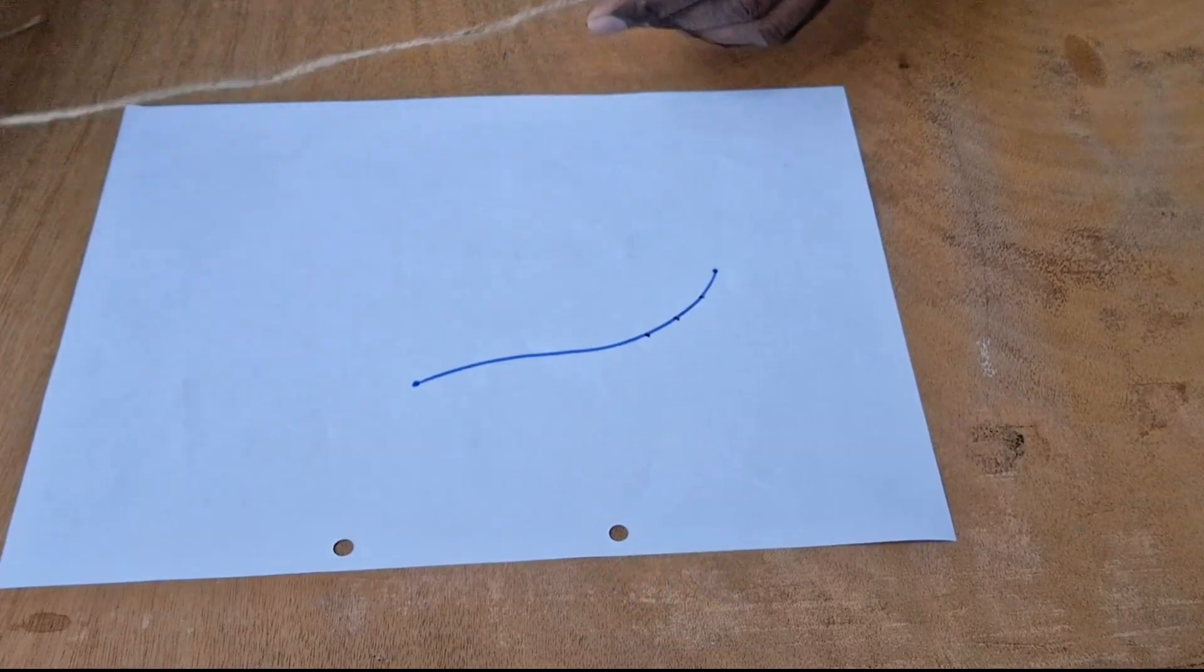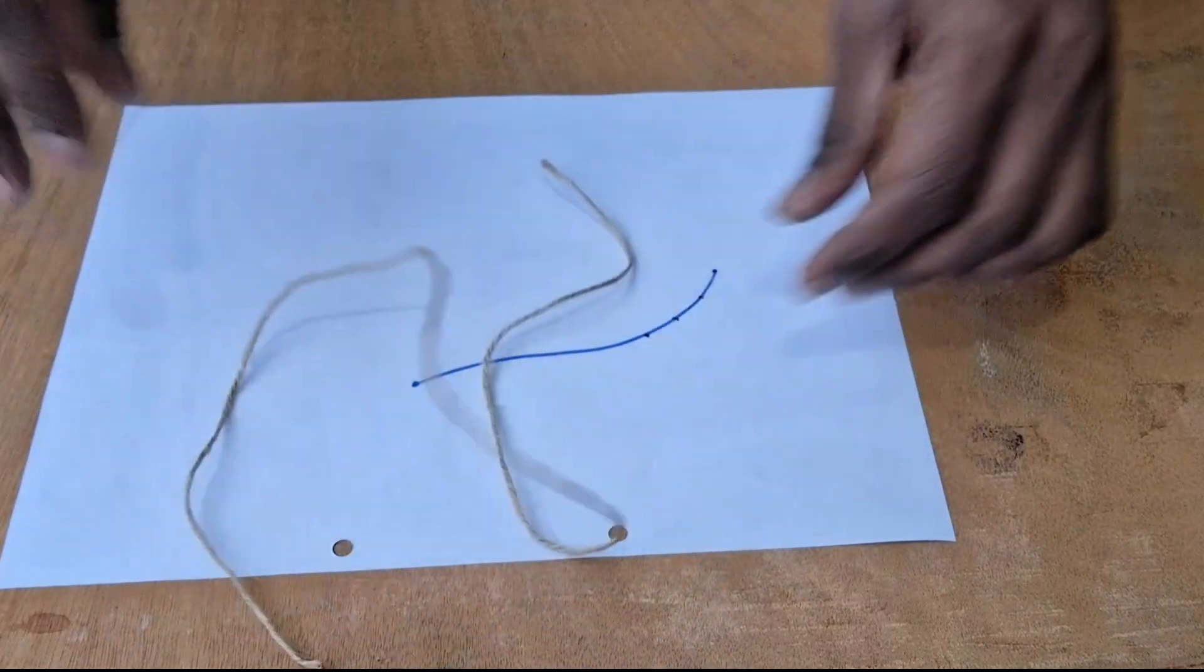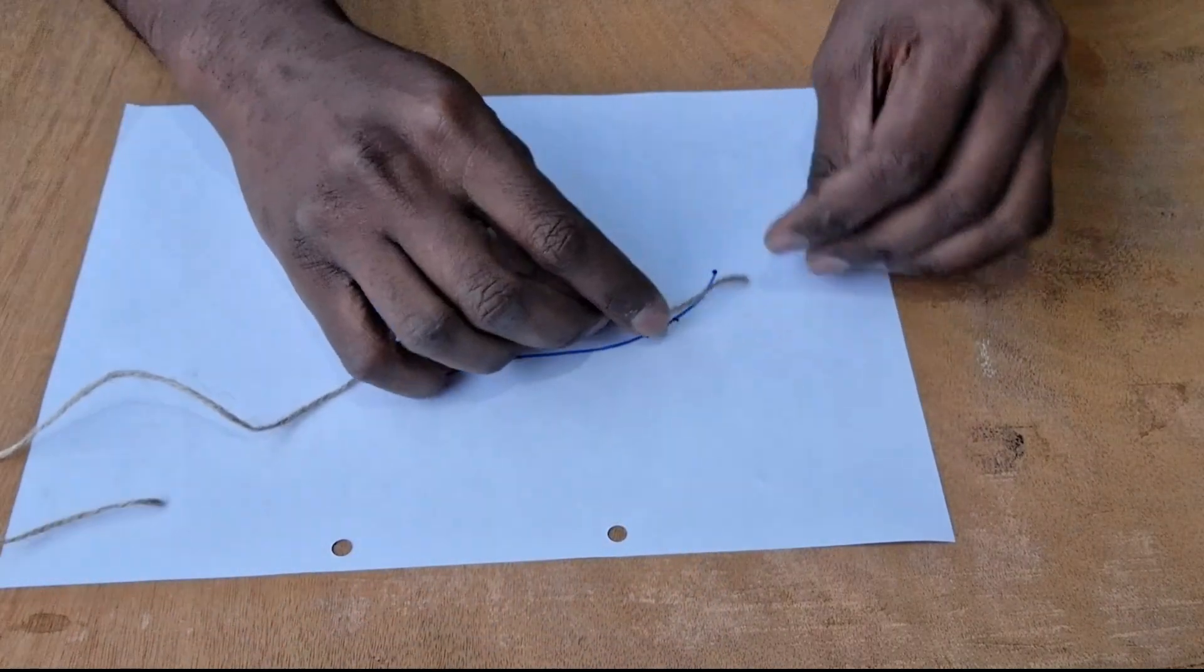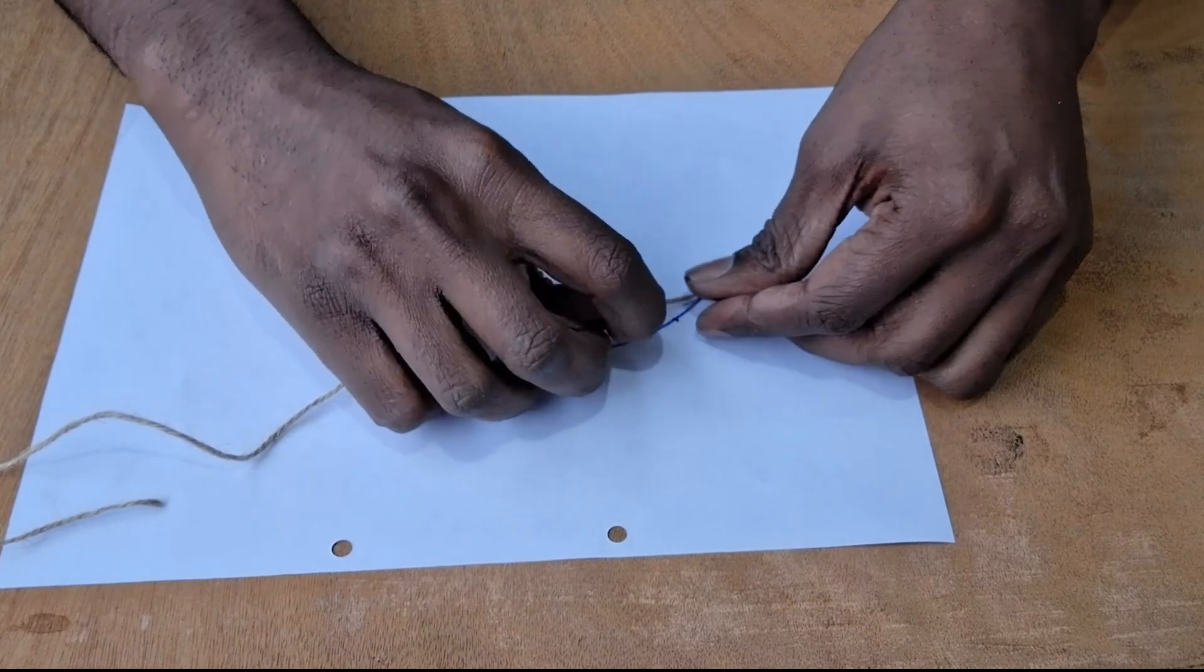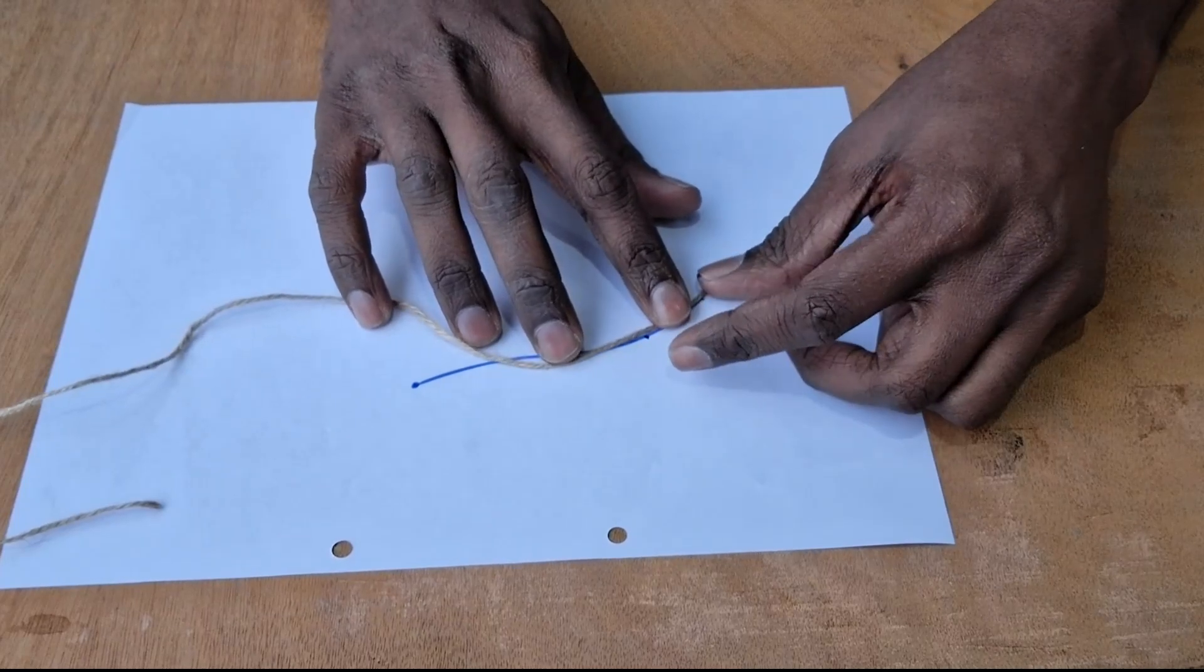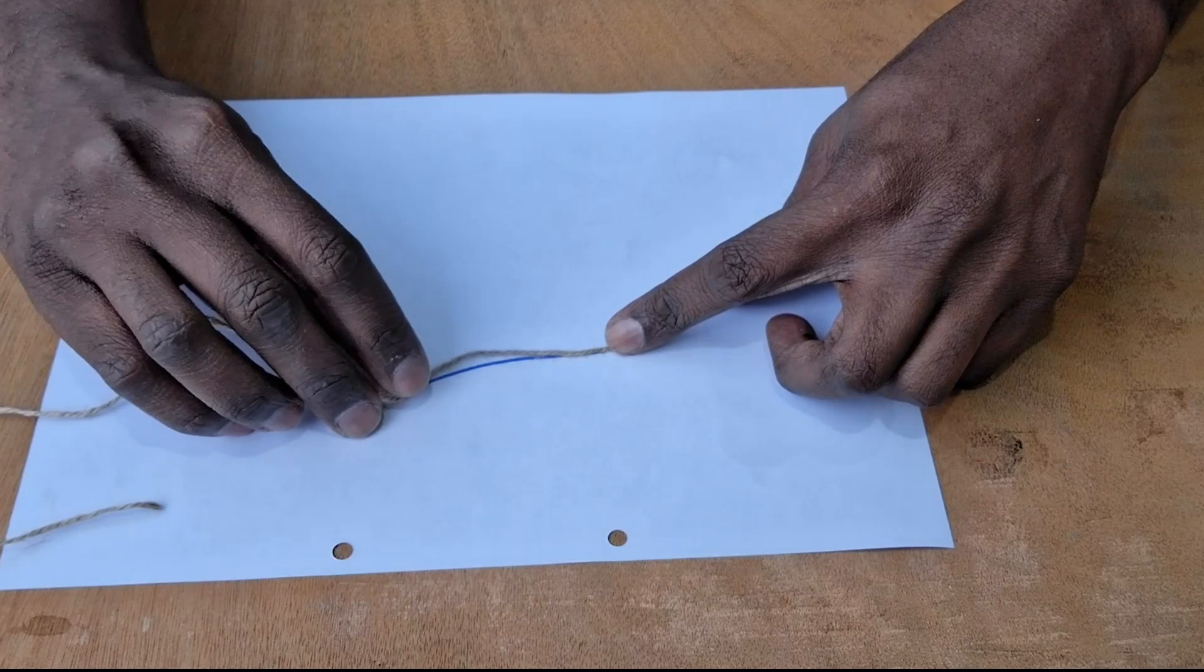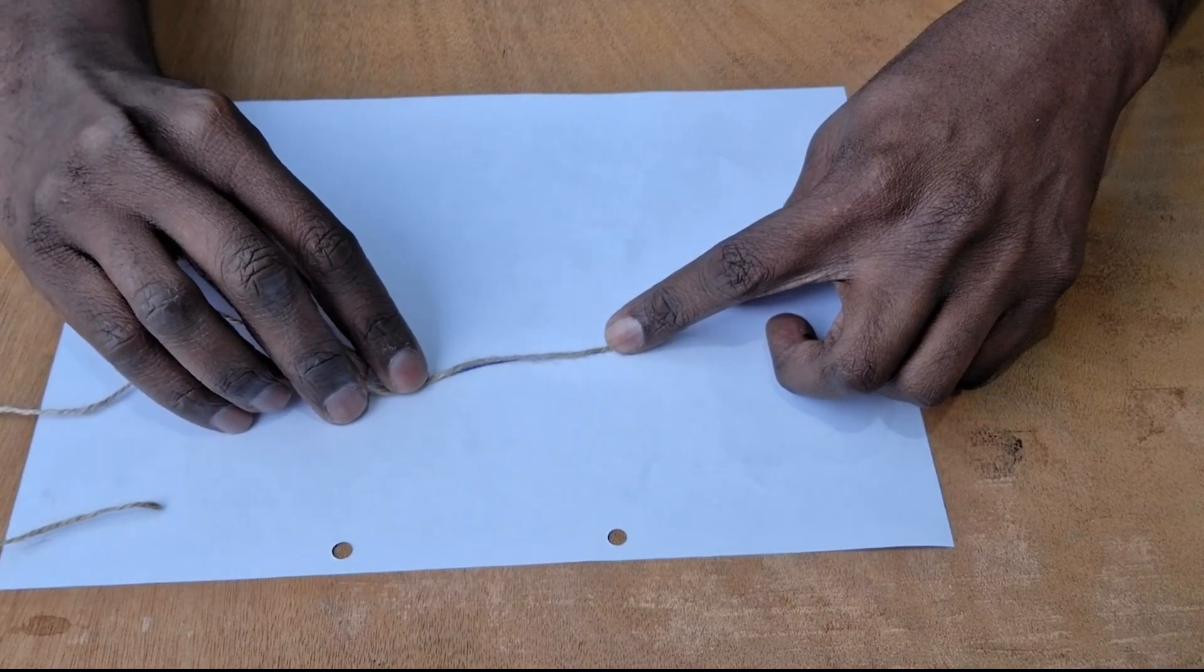If you think about it, if we have a string or a small rope of sorts, we could take that and align one end of it at the starting point of the line and then try to overlap our rope or our thread on the line that we had drawn. We could do that.